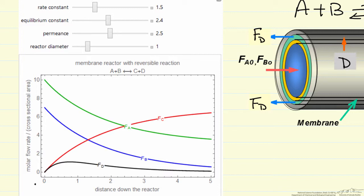And then we're plotting this versus distance down the reactor, so the reactants A and B are fed in different concentrations.